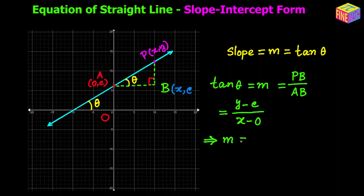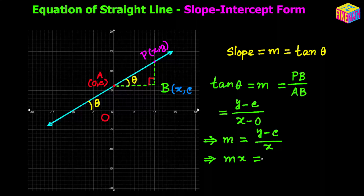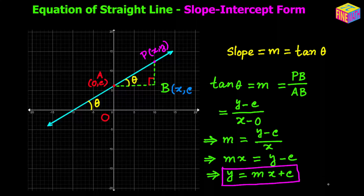From here we can say m is equal to (y minus c) divided by x. If we multiply both sides by x, the left side becomes m times x and the right-hand side becomes y minus c. From here we get y is equal to mx plus c, and that is the slope-intercept form of the equation of a straight line. In this equation, x and y are the coordinates of the moving point P, and m is the slope and c is the y-intercept.